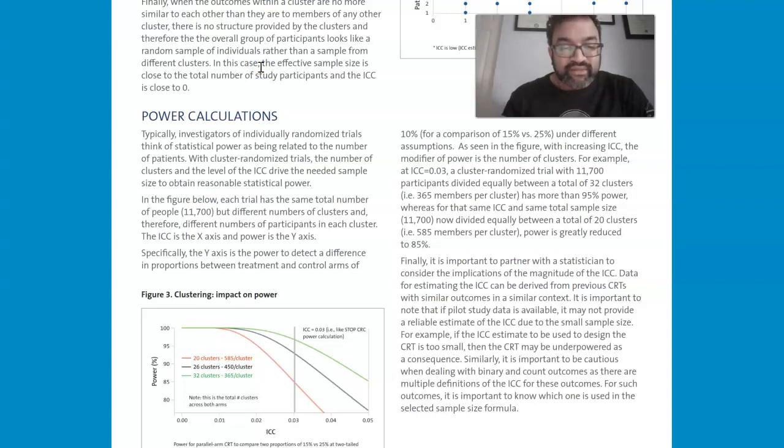So when you finally look at the power calculations and the clustering and the impact on power, power, simply put, is the ability to detect a difference in proportions between treatment and control arms. Here, this difference happens to be 10%. So the ability to detect a difference between the treatment and control arm of 10% was what this was measuring.